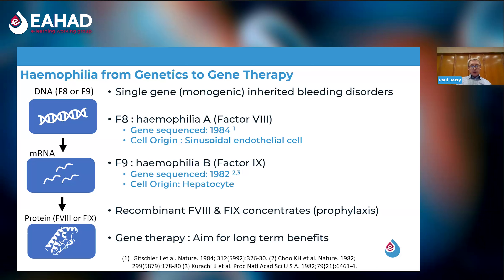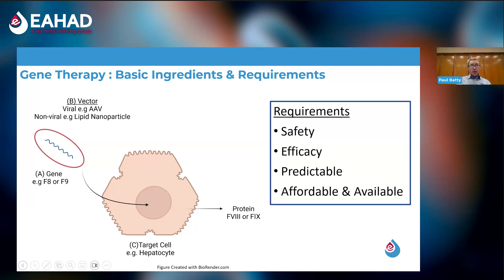Since the discovery of the factor 8 and factor 9 genes, it has long been hoped that gene therapy could provide long-term benefits. When we think about gene therapy, there are key components required for success. The first is the genetic material to be delivered to the cell — in our case, either the factor 8 or factor 9 gene. As genetic material is fragile, it requires a vehicle or vector to traverse the circulation into the cell or organ of interest. These vehicles can be either viral or non-viral. The genetic material must then be delivered to the cell to allow production of factor 8 or factor 9 protein.